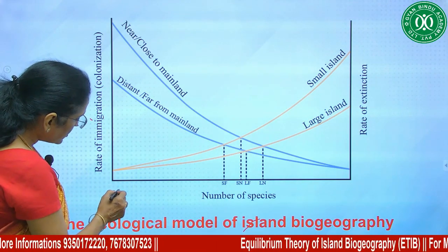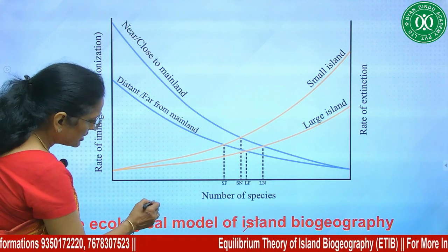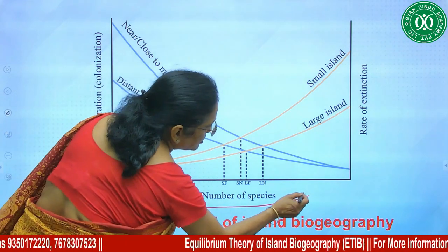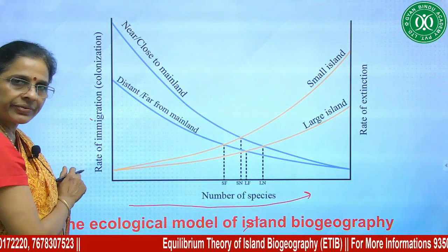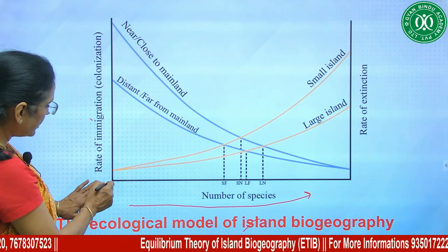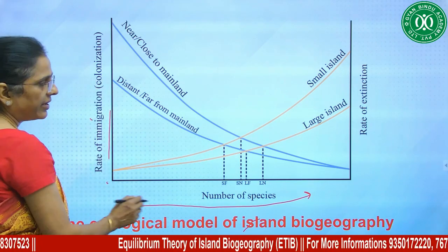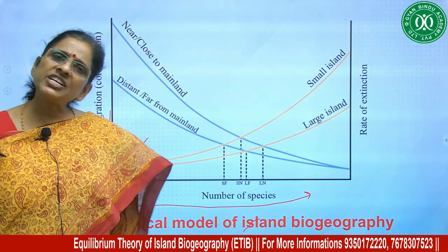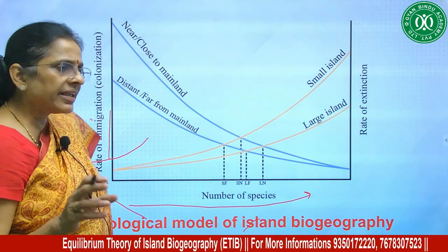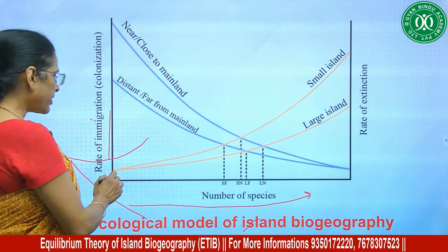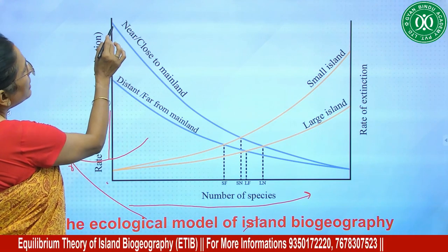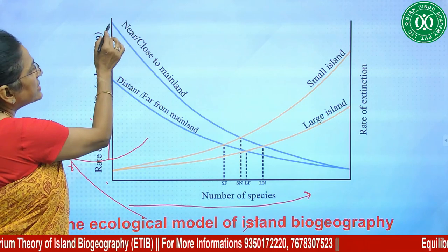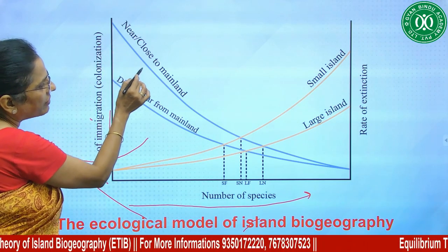When the species count is zero, the number of species is growing and the rate of immigration is at its maximum. When the species count is zero, extinction rate is also zero. When species number is low, immigration is very high, but as species number grows, the rate of immigration decreases — which is logically true.